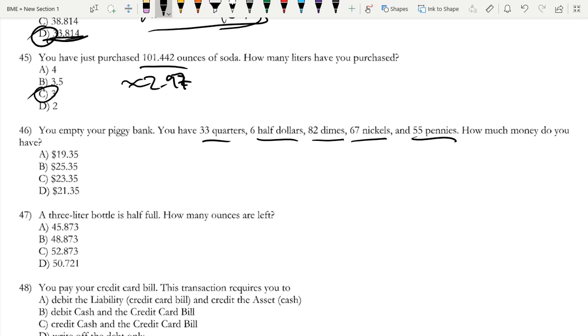So let's just do this. 33 times 0.25 is 8.25. Six half dollars is 6 times 0.5, which is 3. 82 dimes is 8.2 dollars. 67 nickels is 67 times 0.05, which is 3.35, and 55 pennies is 0.55. So let's do this. 8.25 plus 3 plus 8.2 plus 3.35 plus 0.55. This is 23.35, which is C.